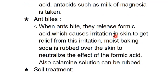When ants bite, they release formic acid into the skin, which causes irritation. To get relief, moist baking soda is rubbed over the skin to neutralize the effect of the formic acid. Sometimes calamine solution is used instead of moist baking soda.